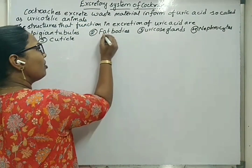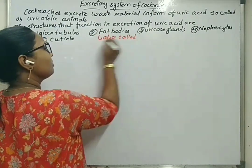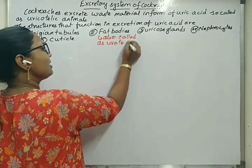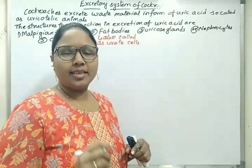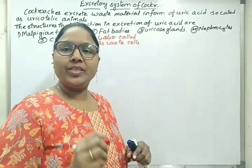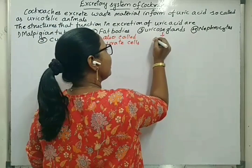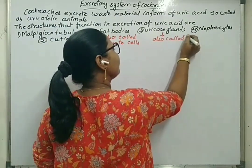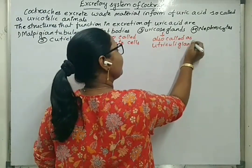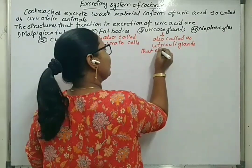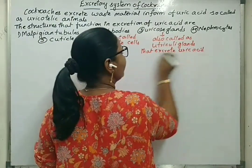Fat bodies are also called uricose glands. Uricose glands are also called utriculi glands, which are a part of mushroom glands in male cockroach. They excrete uric acid during copulation.